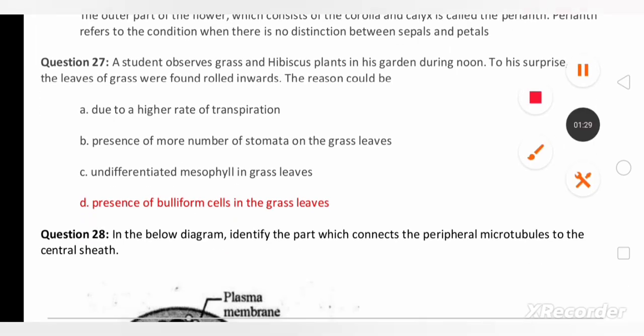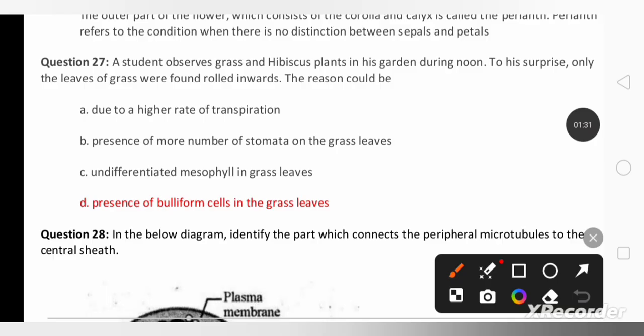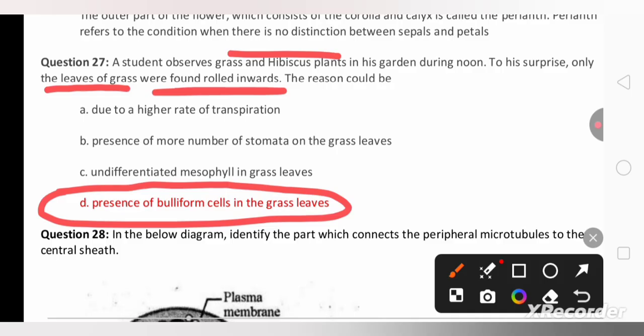In the next question you can find a student observed grass and hibiscus plant in the garden during noon. To his surprise only the leaves of the grass were found to be rolled inwards. The reason is due to the presence of bulliform cells in the grass leaf. Grass is a monocot.